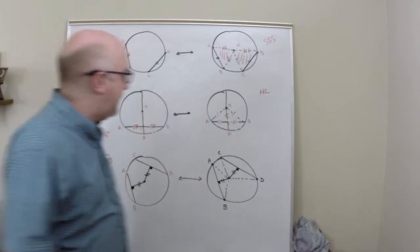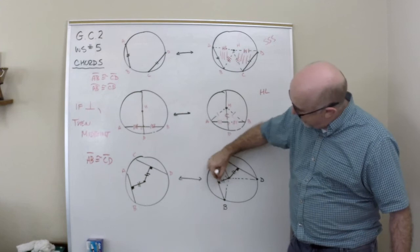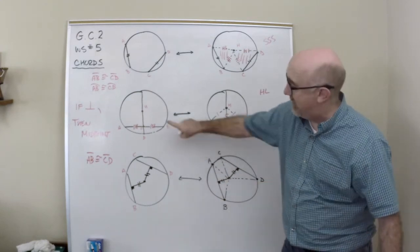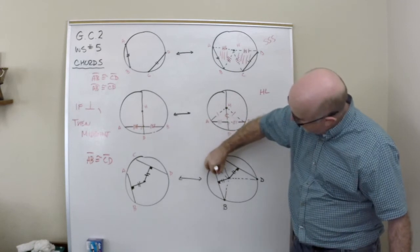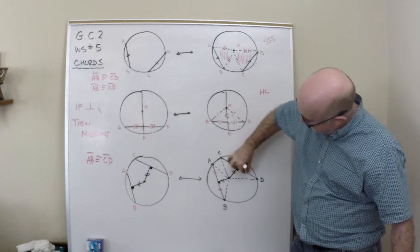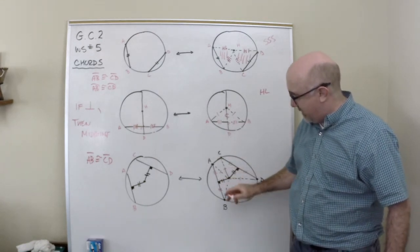But the same thing happens here. If you knew that they were the same distance, they hit at 90. If they hit at 90, they hit at a midpoint. So these would be the same, these would be the same, the radii are all the same. So everybody matches up, side, side, side. Everybody is exactly the same triangle.